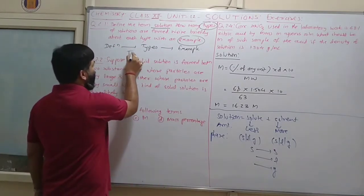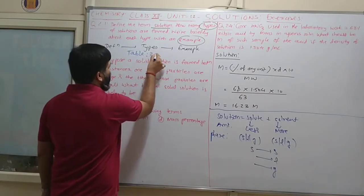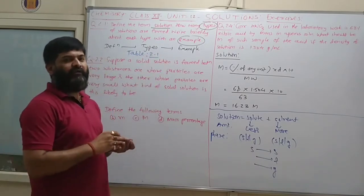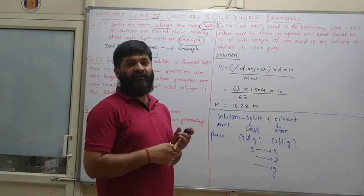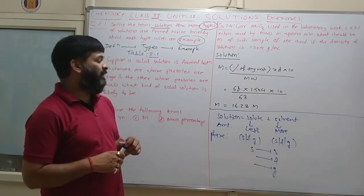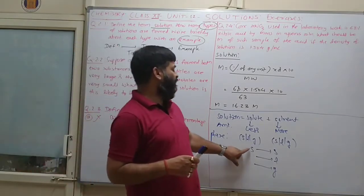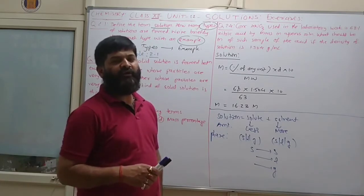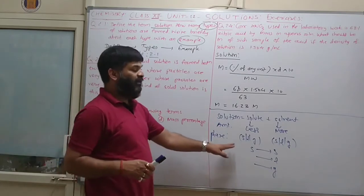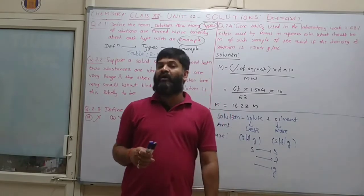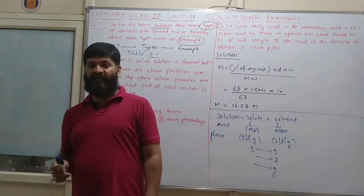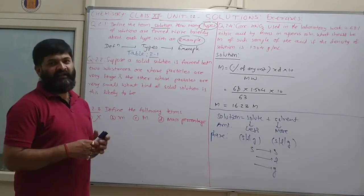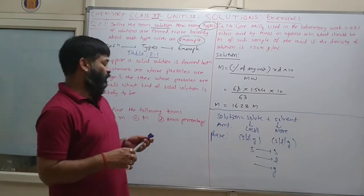All types of examples are given in Table 2.1. For example, solid in solid gives an alloy. Solid in liquid, like sugar in water. This completes question number 1.